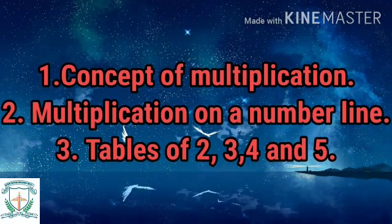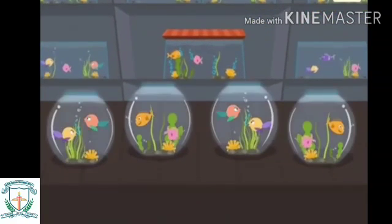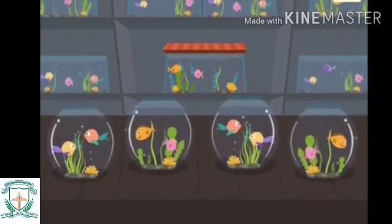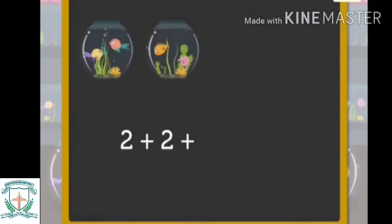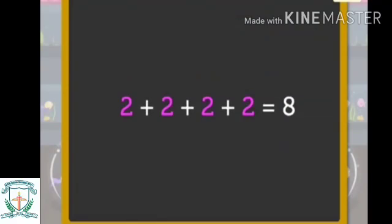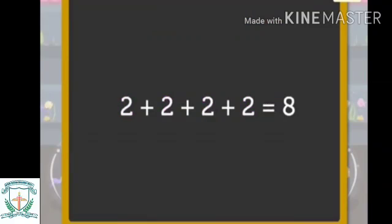Let us understand the concept of multiplication with an example. There are four fish bowls. There are two fish in each bowl. To get the total number of fish in all four bowls, that is two plus two plus two plus two equals eight. There are eight fish in all. Here we are repeatedly adding two, four times. This is called the multiplication operation — multiplication is repeated addition.